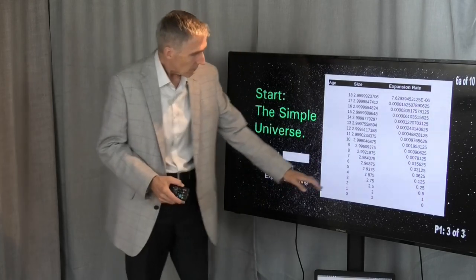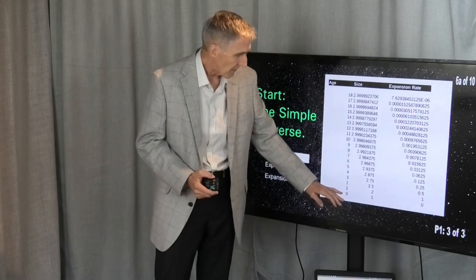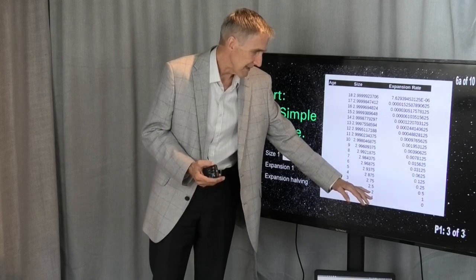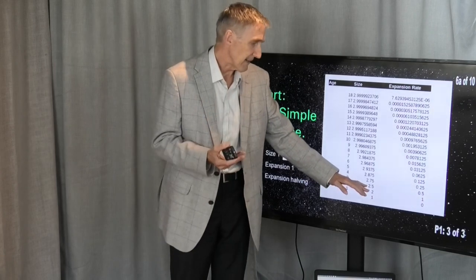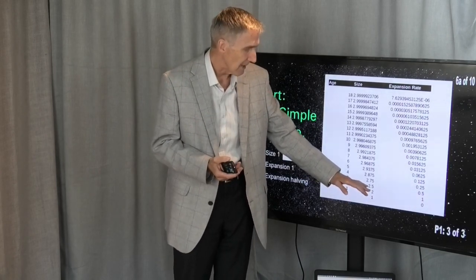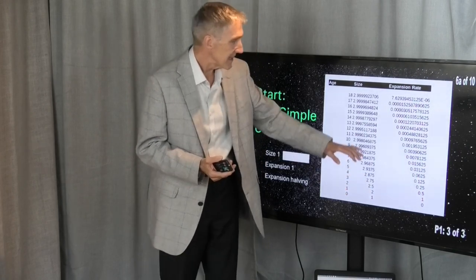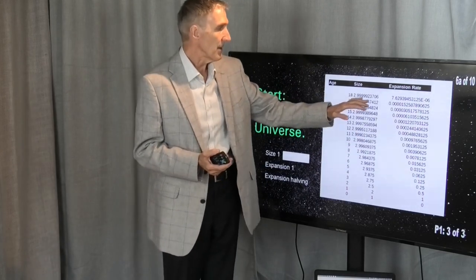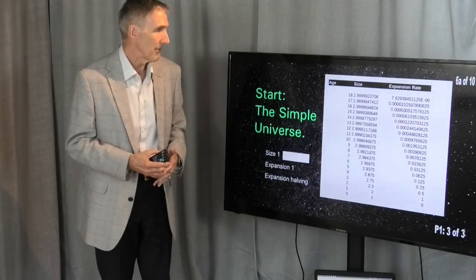Giving us this scenario, where the universe starts off at size one, with no time past. After a certain rate of time, it doubles in size. After a certain rate of time again, it increases, but only a half this time, so it's now two and a half the size it was. Then it's two and three quarters, two and seven eighths, and so on, up until, essentially, we start to approach the limit, which is the maximum size of three.